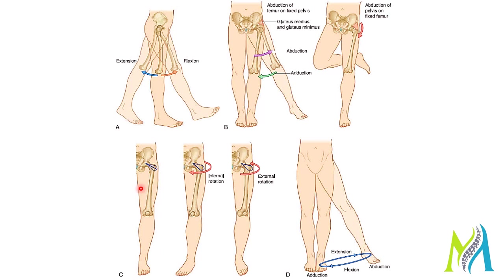Regarding movement at the hip joint: the hip joint is a ball and socket joint — a synovial joint. It allows forward movement (flexion), backward movement (extension), abduction to the outside, and adduction to the inside. It also allows medial rotation when your foot points inward, and lateral rotation (external rotation) when your foot points outward. You are essentially rotating the head of the femur inside the socket.